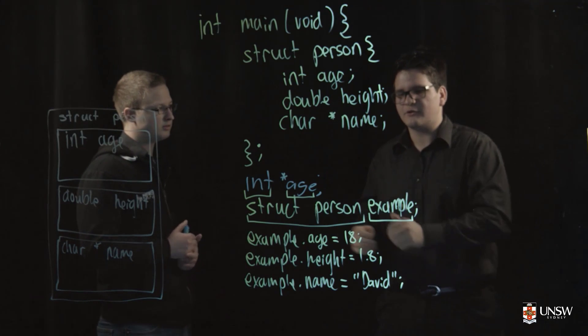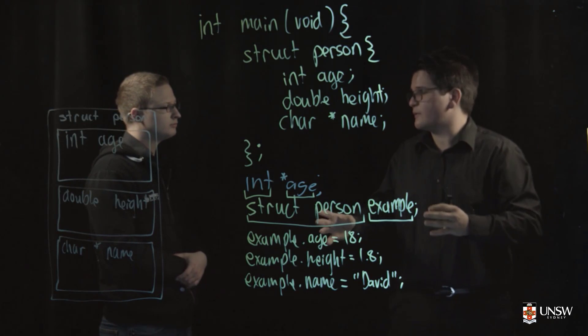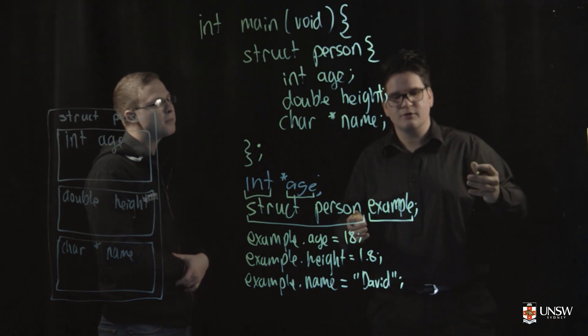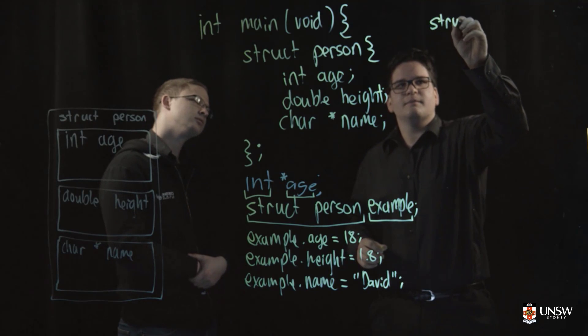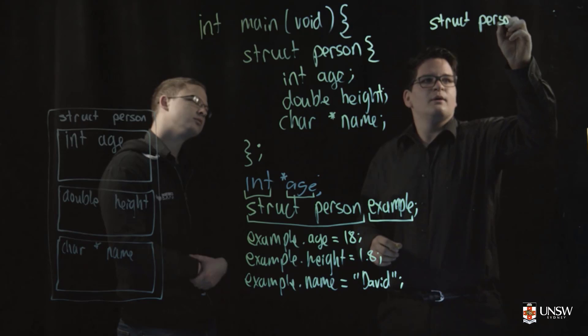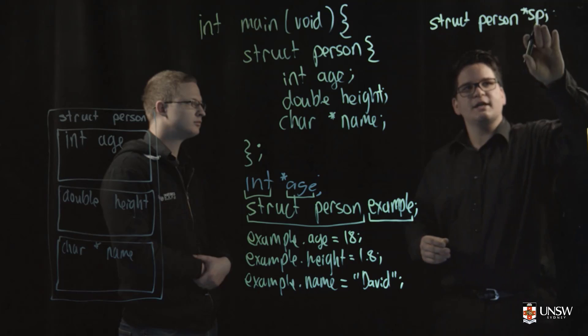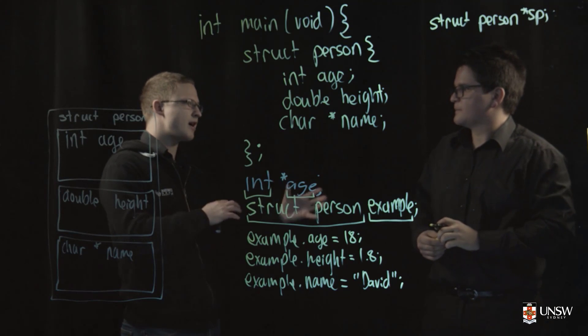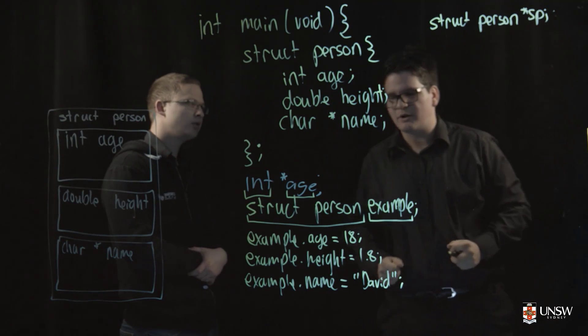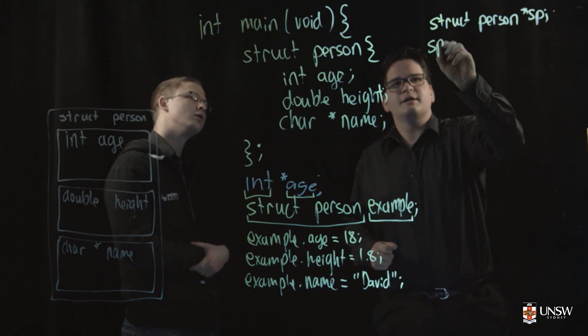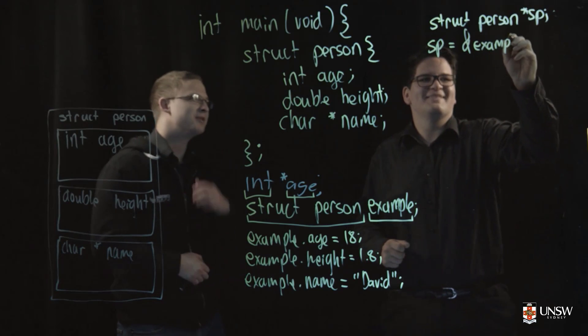One reason you might want to do this is if you want to pass a structure into a function by reference. And the way we would do this is first we need to create the struct pointer variable. So we would write struct person star sp. So that is a variable called sp which points to a struct person. And now we need to give sp an address. That's right, so we can give it the address of the example variable that we've made here. Cool. So sp is equal to the address of example. That's a pretty good ampersand by the way. Thanks.